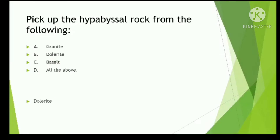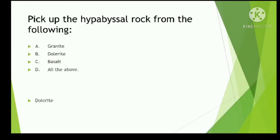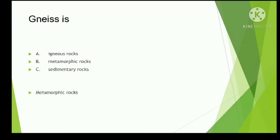Pick up the hypabyssal rock from the following. Hypabyssal is the category of igneous rock that is present at shallow depth. The options are granite, dolerite, basalt, and all of the above. The right answer is dolerite.